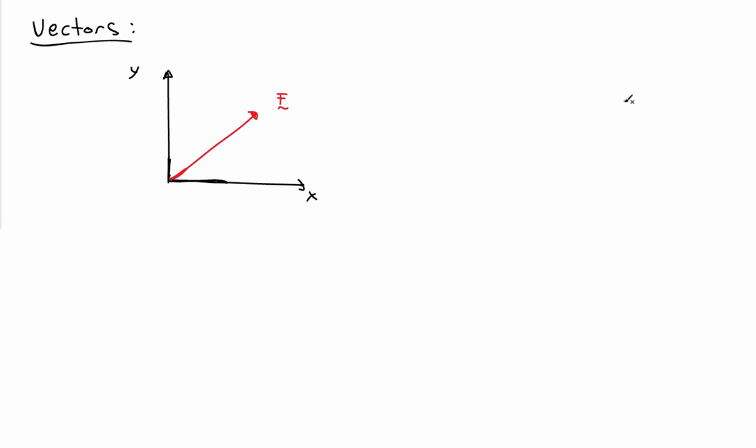To begin, let's start with the case of vectors and talk about what it means to represent a vector in one coordinate frame versus another. Here I have vector F and a coordinate frame XY. In the XY frame, I can represent F in terms of its components in the X and Y directions. I have the unit vectors EX and EY in the two coordinate directions, and then the components of F with respect to those axes — just the orthogonal projections of F onto the X axis and onto the Y axis — giving me FX and FY, the components of vector F in the XY coordinate frame.